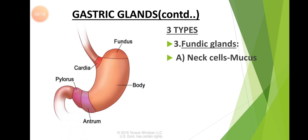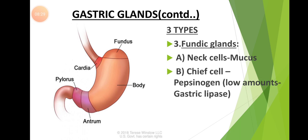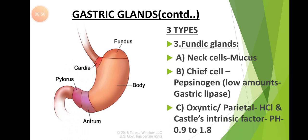The fundic gland contains a number of types of cells. Some cells secrete mucus. The chief cells — also called peptic cells — secrete pepsinogen, an enzyme responsible for the digestion of proteins. They also secrete low amounts of gastric lipase. The oxyntic cells, also called parietal cells, secrete HCl and Castle's intrinsic factor. This Castle's intrinsic factor is responsible for the absorption of vitamin B12 (cyanocobalamin).